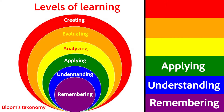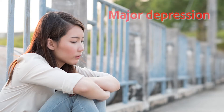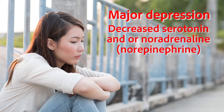Let's apply our knowledge of the general ways that drugs work on neurons by hypothesizing about how antidepressants would work. It's widely accepted that depression occurs due to a decrease in the neurotransmitters serotonin and/or noradrenaline in areas of the brain associated with mood. So there is a shortage of serotonin or noradrenaline. Hypothesize on the ways in which antidepressants could work.